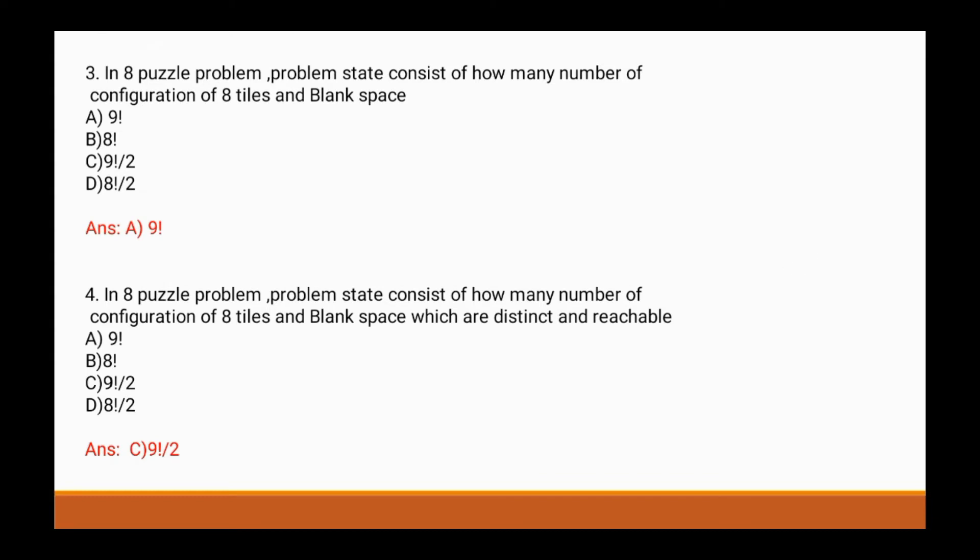Question 5: A problem definition which contains some special information about states for exploration and expansion is called dash. Options are: a) informed search, b) uninformed search, c) blind search, d) b and c both. The correct answer is a) informed search.